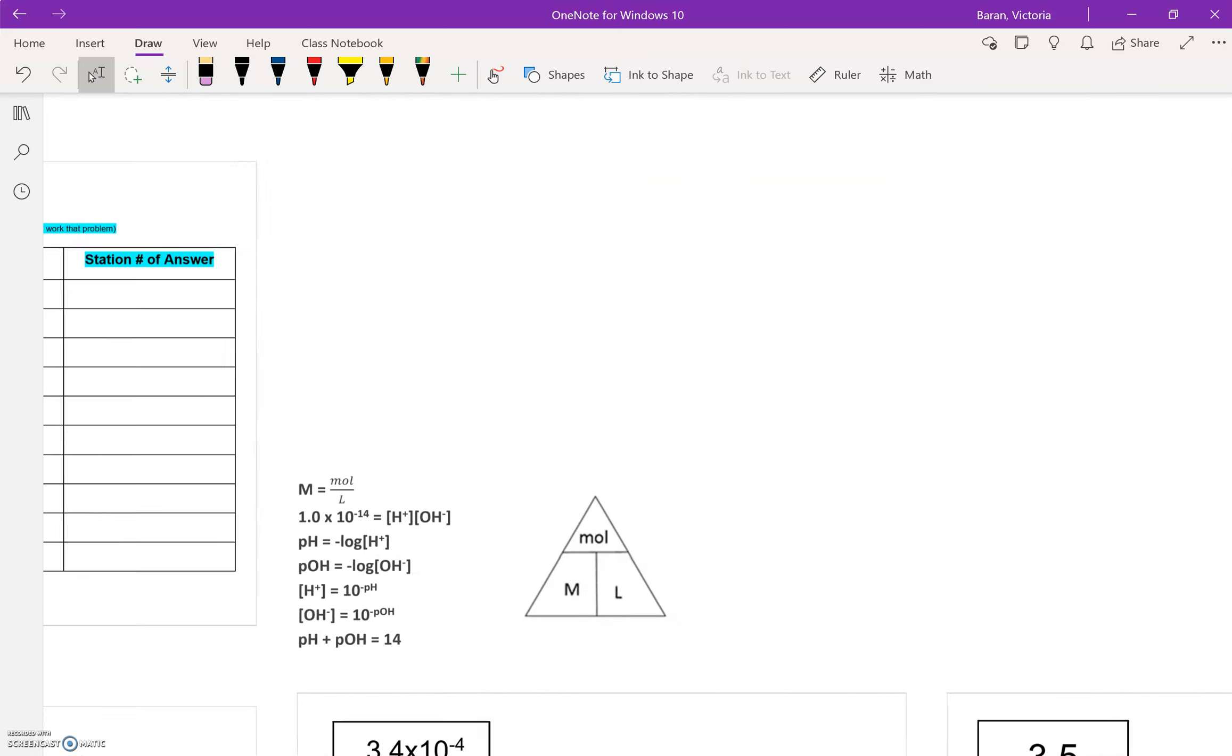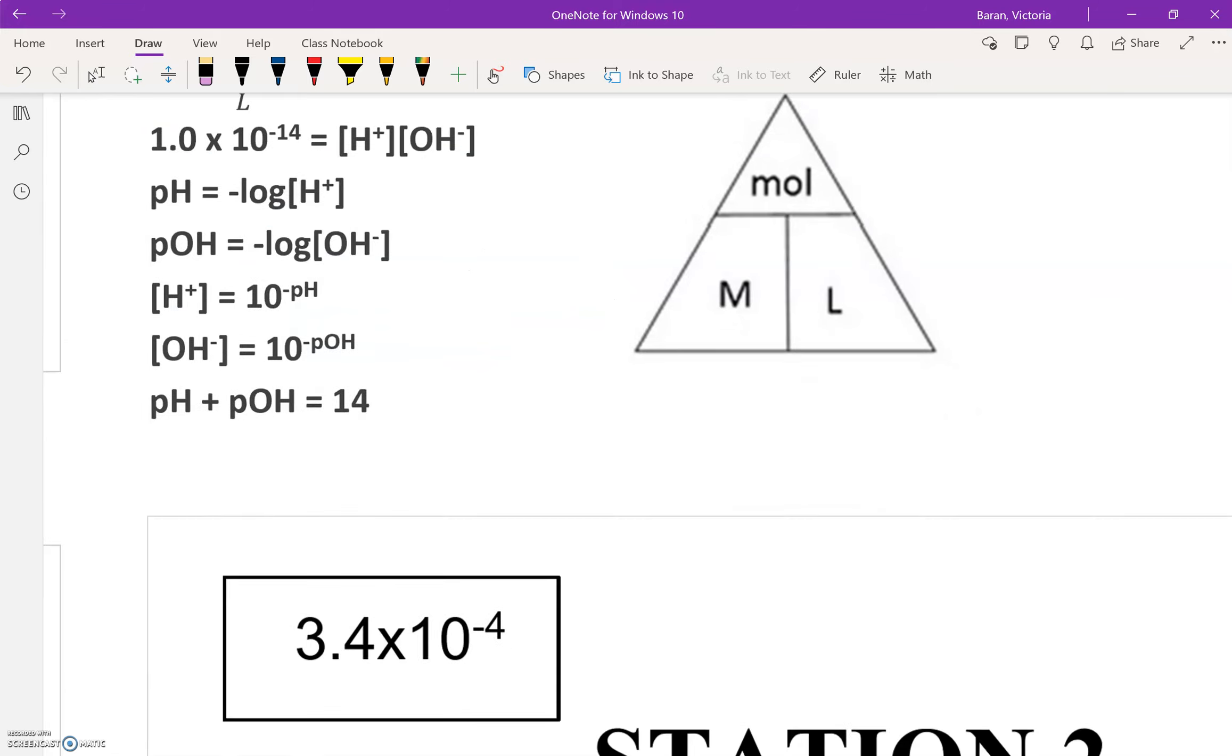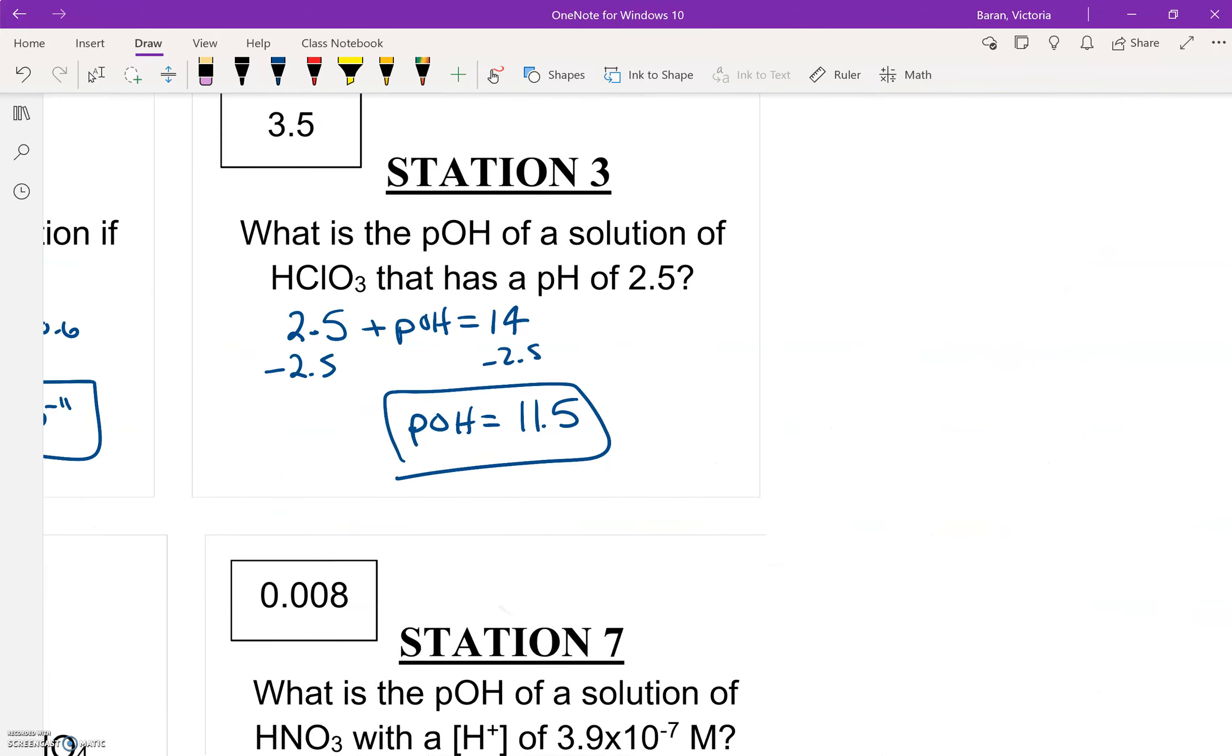So first is we could plug in OH here to solve for pOH, and then we could use pOH to solve for pH. You could also use this equation to solve for H+, and then you can plug in H+ to solve for pH as well. I'm going to take the first route that I suggested. Both would be correct.